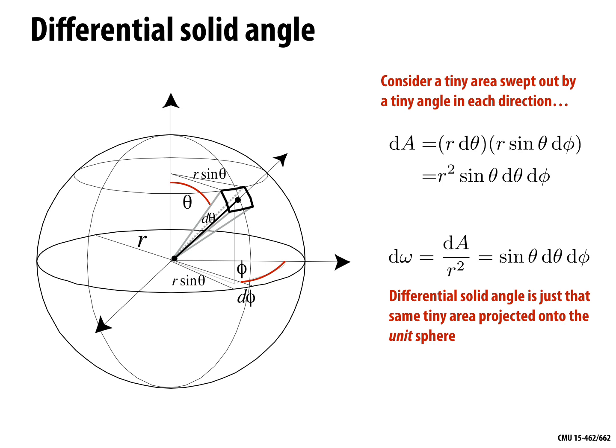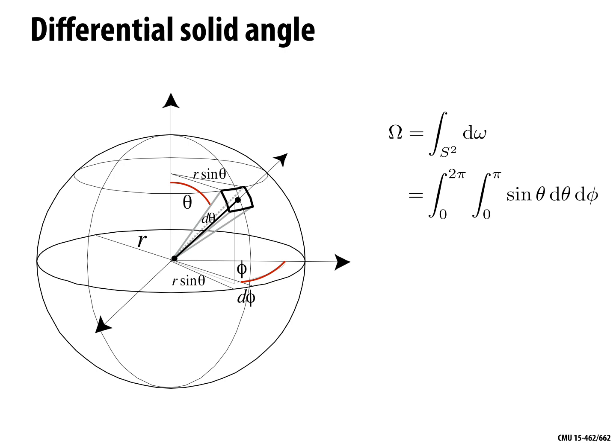For instance, integrating differential solid angle over the whole sphere gives the total solid angle omega. Integrating from 0 to 2 pi in phi and 0 to pi in theta of sine theta d-theta d-phi equals 4 pi. So the differential solid angle is also the integrand in an area integral over the sphere. People in rendering also use little omega to denote a direction vector — a point on the unit sphere — and these are used interchangeably.